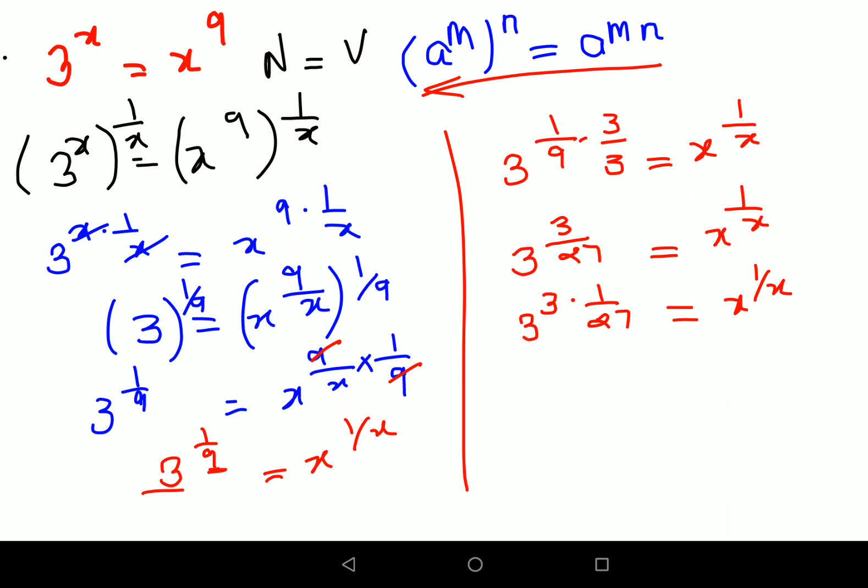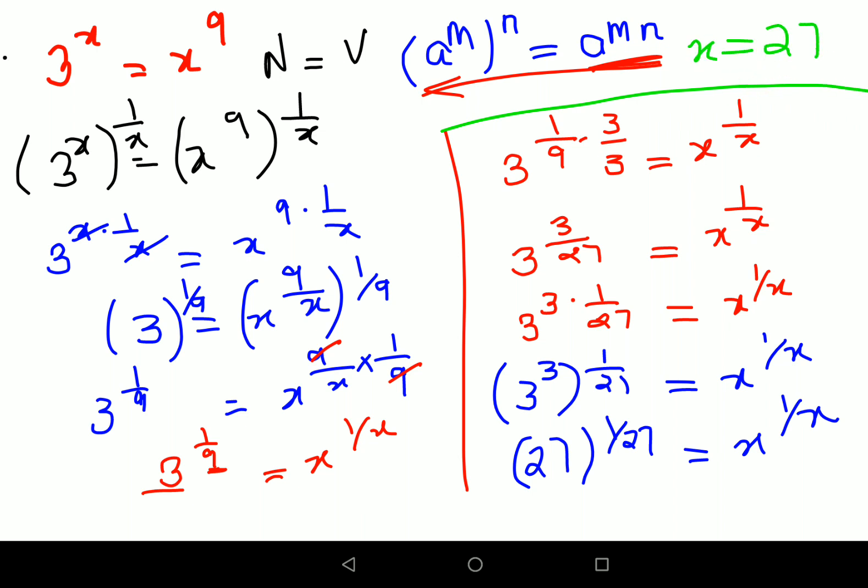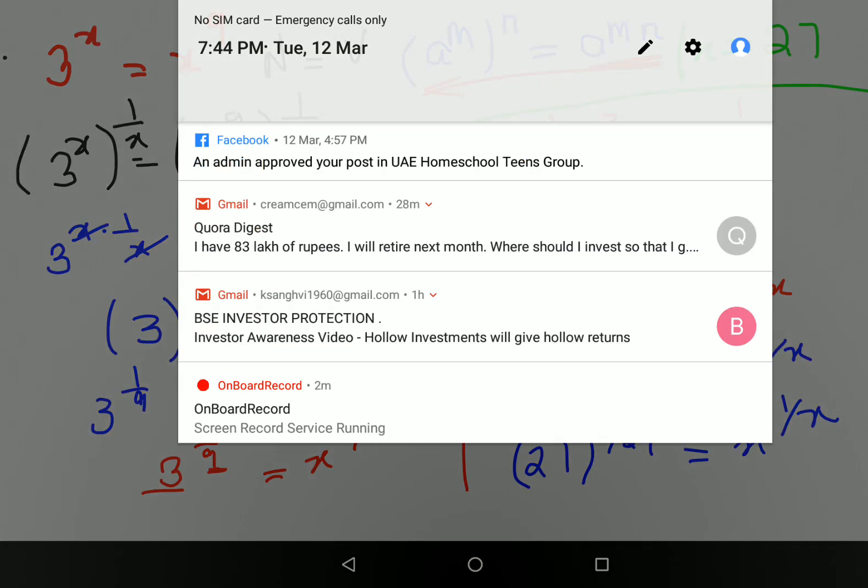Using this, I'm putting it the other way around because when you have a^(m·n) I can put it in brackets. I can write this as (3^3)^(1/27) equals x^(1/x). So this is 27^(1/27) equals x^(1/x). For this particular question, I can say x value is 27.